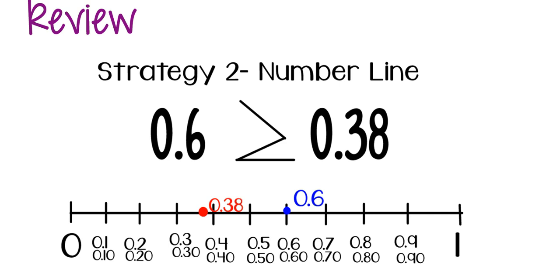Our second strategy was using a number line to compare decimals. In this problem we are comparing six tenths to thirty-eight hundredths. We draw a line, break it into tenths, label it, and also label equivalent hundredths. Then we plot our decimals: thirty-eight hundredths is a little less than four tenths, six tenths comes a bit more than halfway. The number closest to the whole is larger, so six tenths is greater than thirty-eight hundredths.